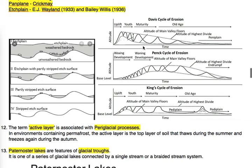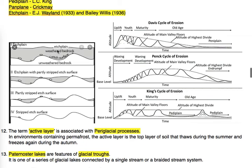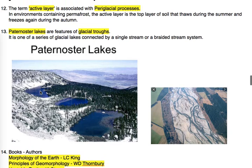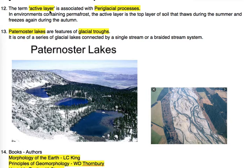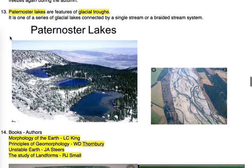The diagram discussed earlier is related to H plane. Moving to the 12th point: the term 'active layer' is associated with periglacial process. In environments containing permafrost, the active layer is the top layer of soil that thaws during the summer and freezes again during autumn. So the active layer is associated with periglacial because in winter it freezes and in summer it thaws.